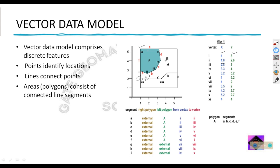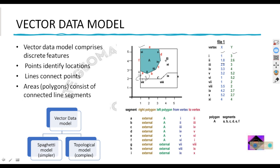There are two types of representation in vector data models. One is the spaghetti data model, which is simpler — vertex i has position x, y (1, 3) and segment A is represented from vertex i to 2. The other is the topological model, which is more complex but stores data in a more optimized way. In the topological model, segment A is represented by its right polygon and left polygon — the external polygon and the internal polygon.